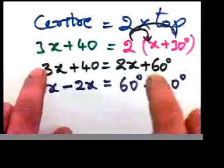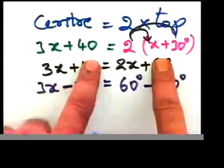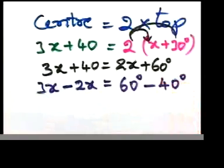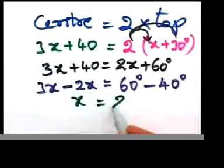Please people, watch. We simply swap them. Those two come to one side, those two will stay on one side, right? 3x minus 2x should be 1x, and 60 minus 40 should be 20.